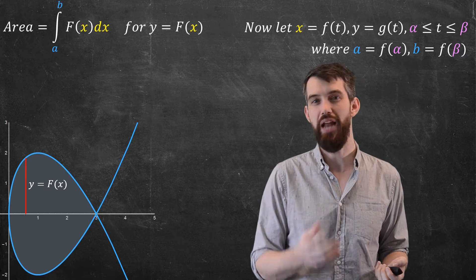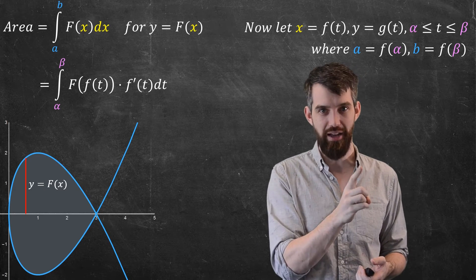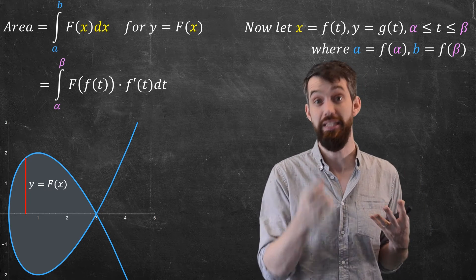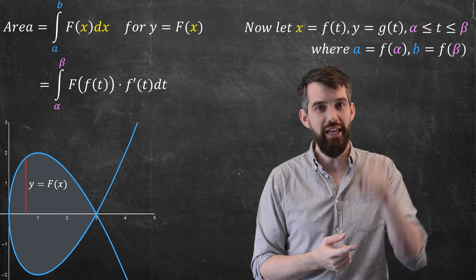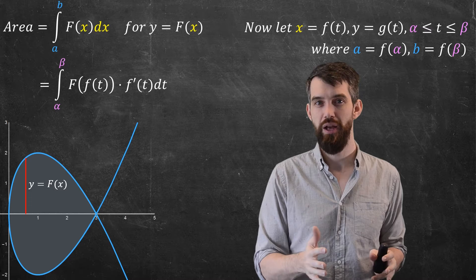And then if I want to plug this in, I'm going to claim I get the following formula. I claim it's an integral from alpha to beta, it's an integral with respect to t, it's got a dt there, and then it's big F of little f times f prime. Okay, why do I write this down?